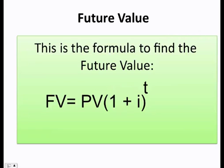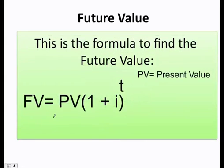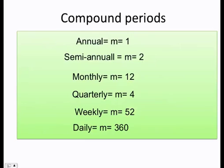Here we have the formula for the future value. As you can see, PV means the present value, i means the interest rate, and t is going to be the time. Let's do some problems, but before that, let's talk about the compound periods.